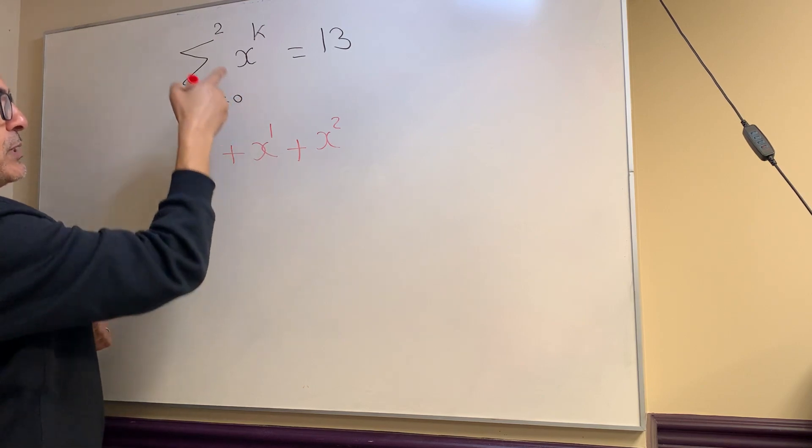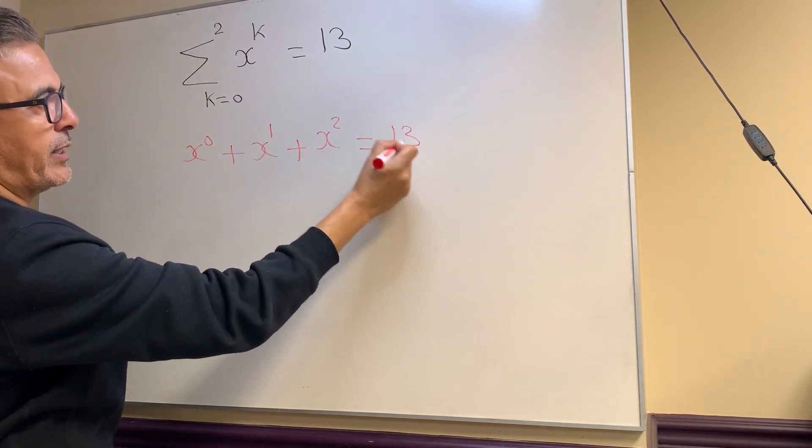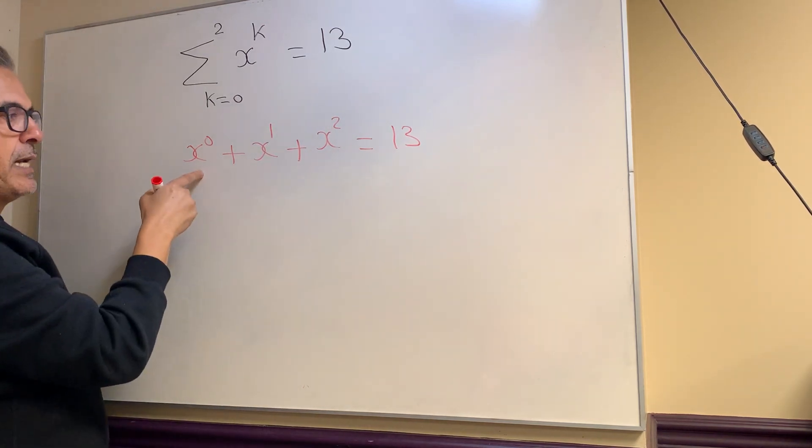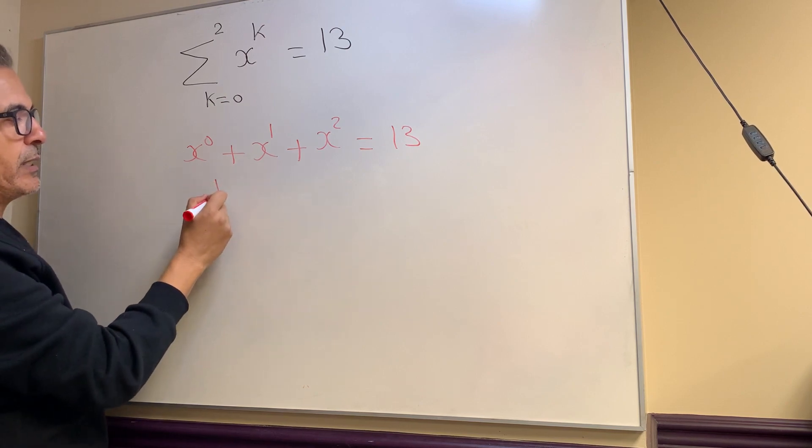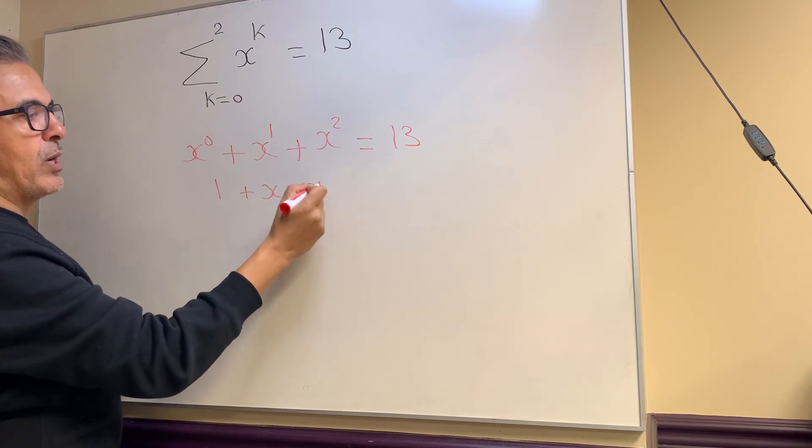You're substituting between 0 and 2 for k, and that should equal 13 because the sum was given to you. Now I'm going to simplify this further. x^0 gives me 1, anything to the power of 0 is 1, plus x^1 is just x, plus x^2 equals 13.